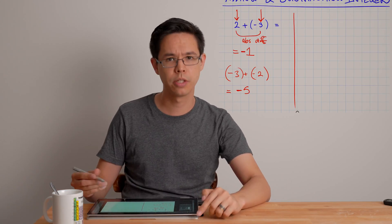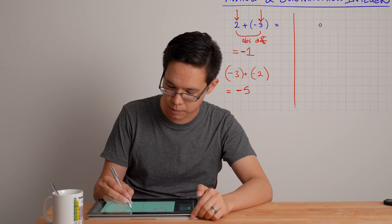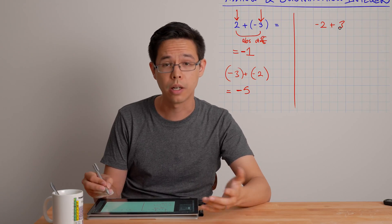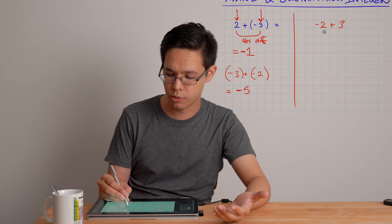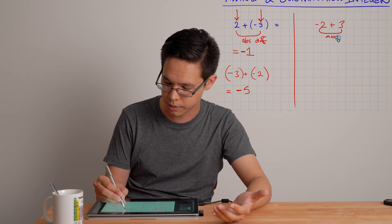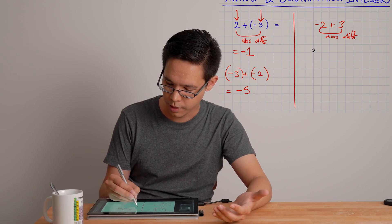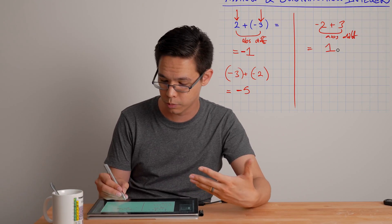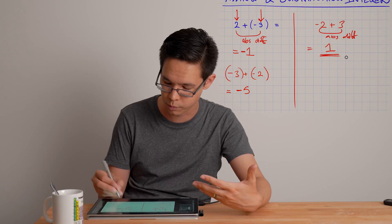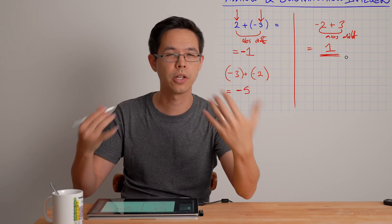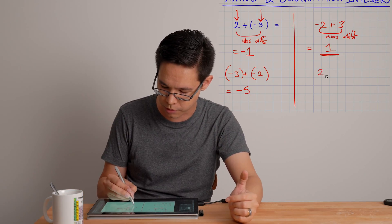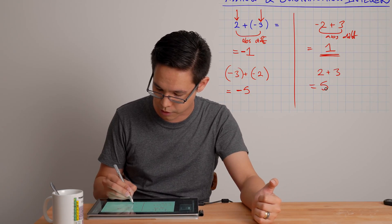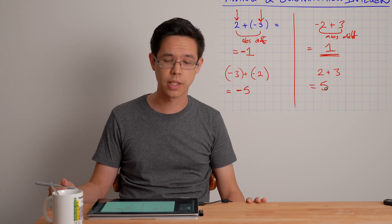In case I didn't mention in the previous video clip, we were doing problems like negative 2 plus 3. Obviously we do the absolute difference trick there. So abs diff and we get a difference of 1. Then we look is the negative or the positive larger. Well the positive is larger therefore the answer is just 1. It goes with that saying if I have two positive numbers, so 2 plus 3, well it's just going to be 2 plus 3 the same as you've always learned. So it'll be just 5 stacking the positives together.